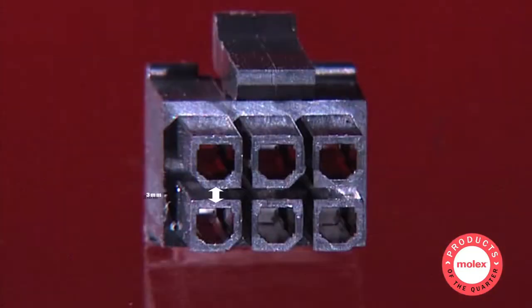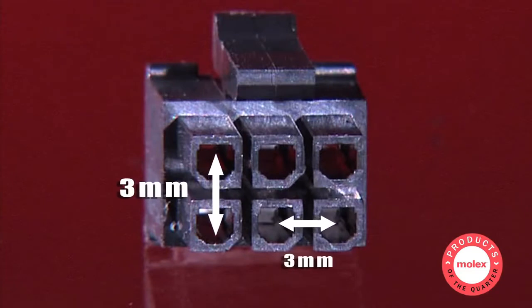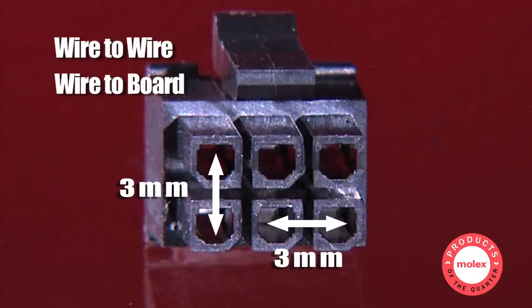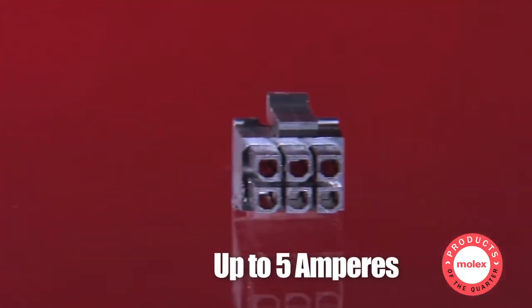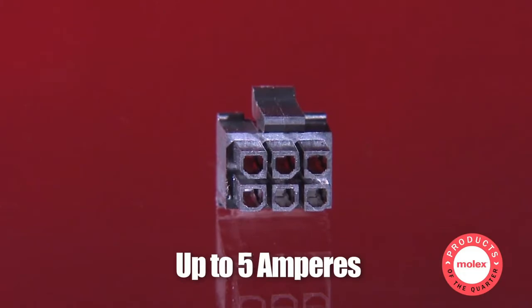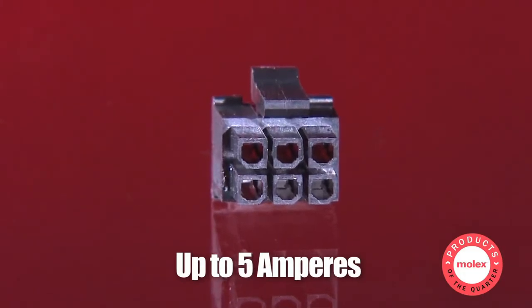Microfit products are based on a three millimeter center line in wire-to-wire, wire-to-board, and board-to-board configurations and are the perfect fit when compact connectors are needed that can carry up to 5 amps of current.